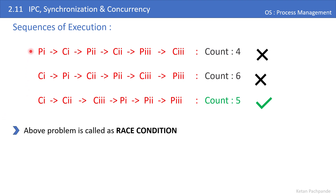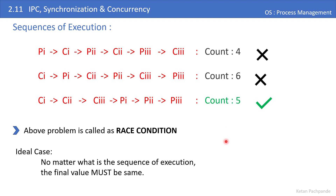The problem of getting different outcomes when the sequence of instruction execution changes is known as race condition. Race condition is the behavior of a program that produces different outcomes if the sequence of execution of instructions changes. The ideal case is that no matter what the sequence, the final outcome must be the same — but here we get different values, so this producer-consumer problem suffers from race condition.